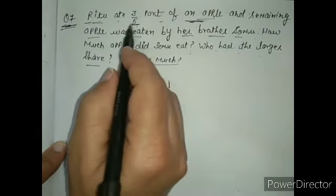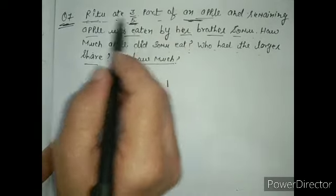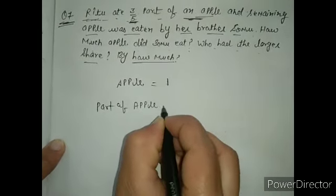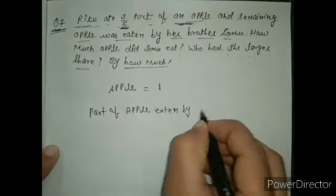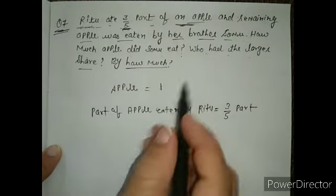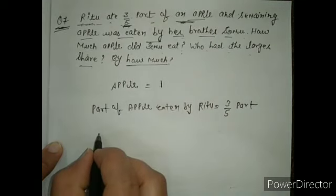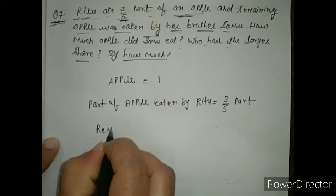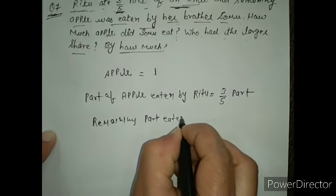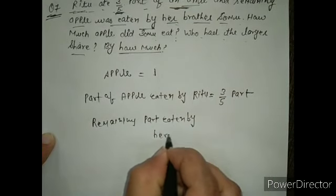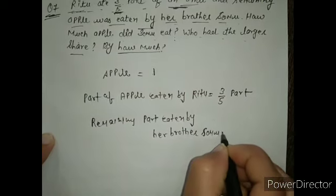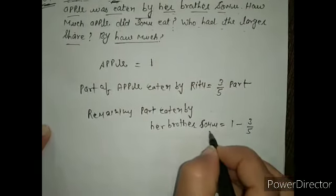You have 1 apple and Ritu has eaten 3/5 part. So write the part of apple eaten by Ritu as 3/5. The part eaten by her brother Somu is 1 minus 3/5.